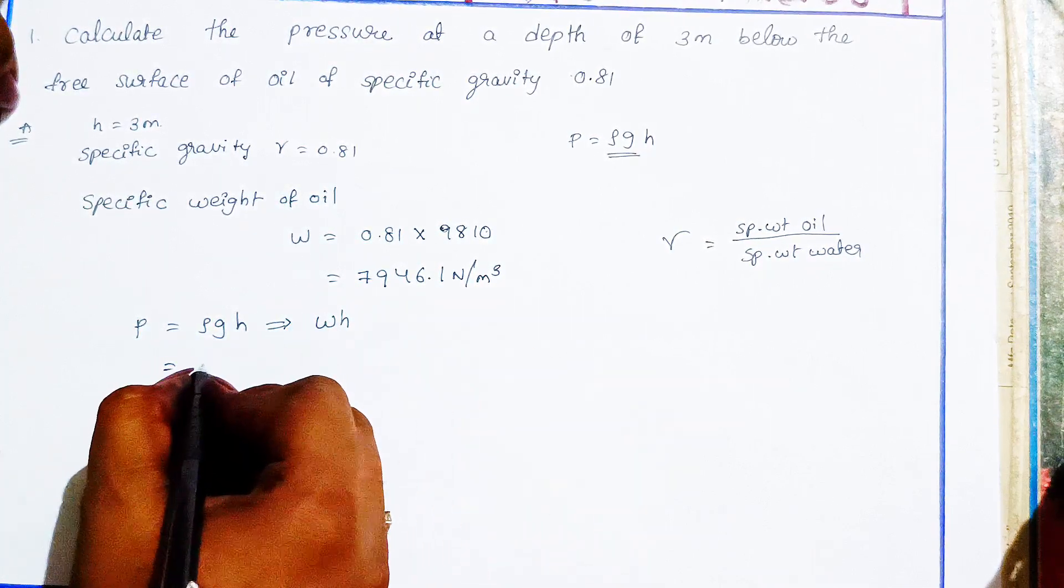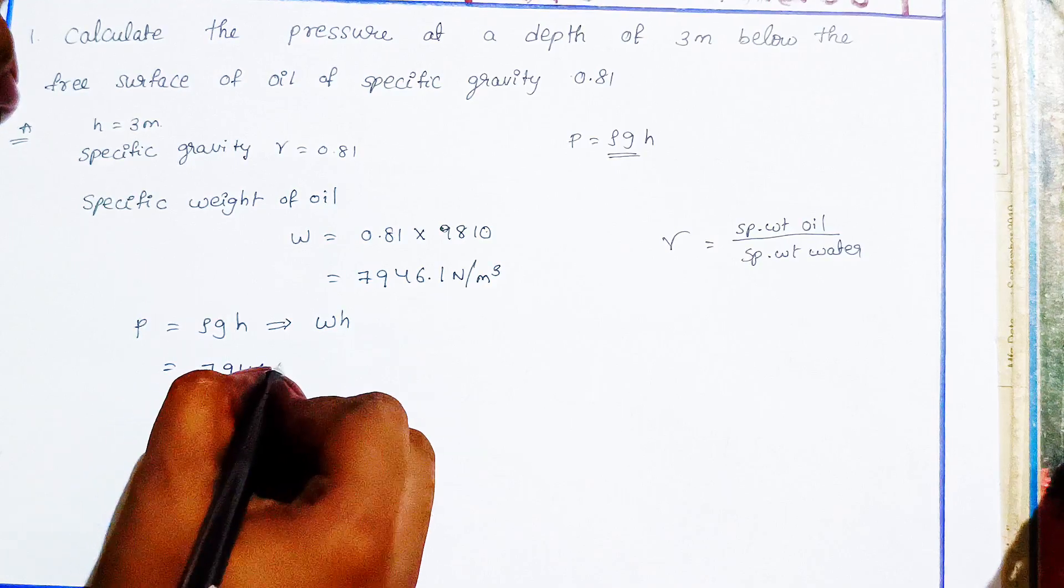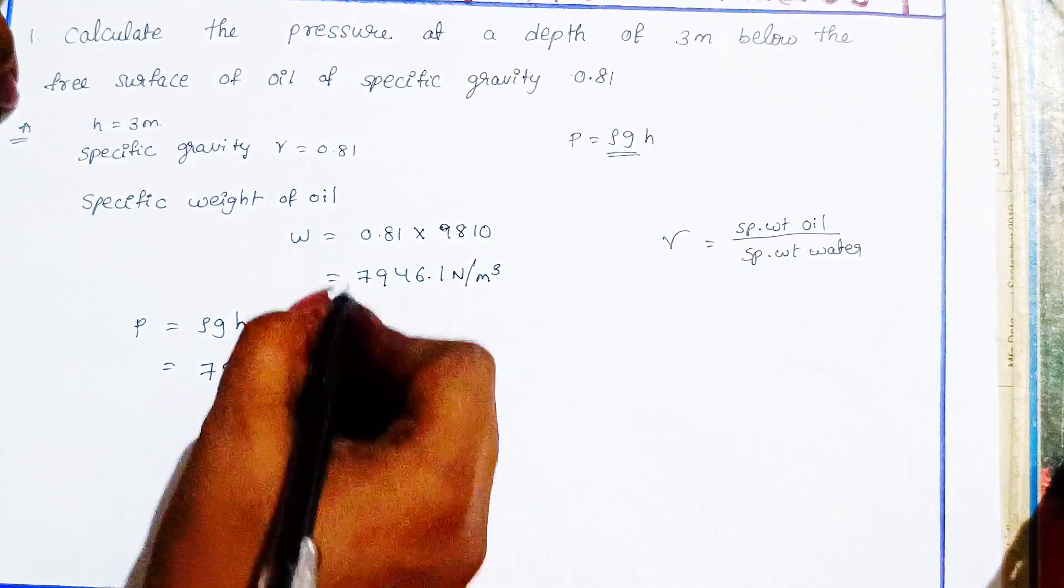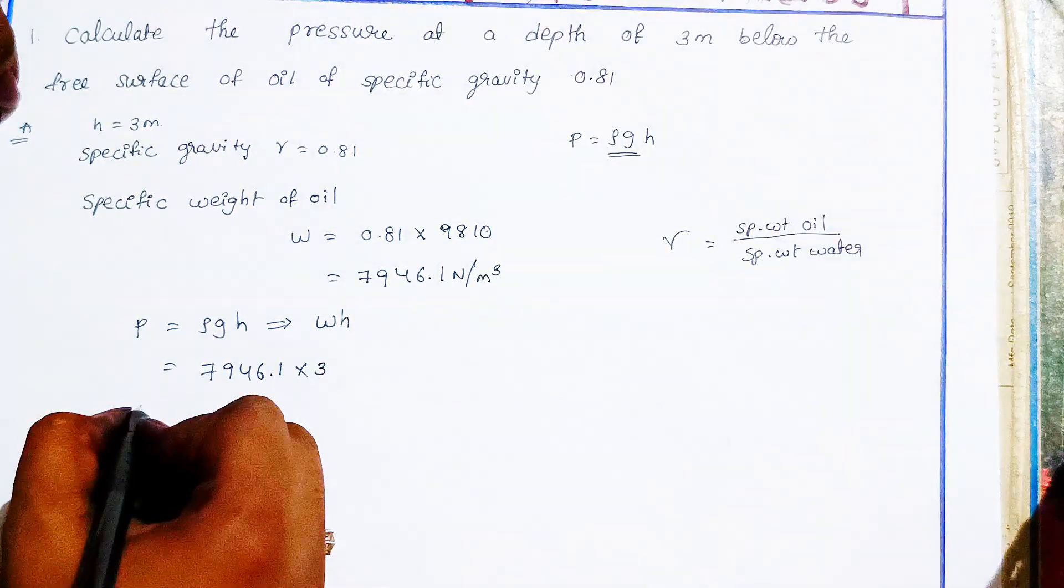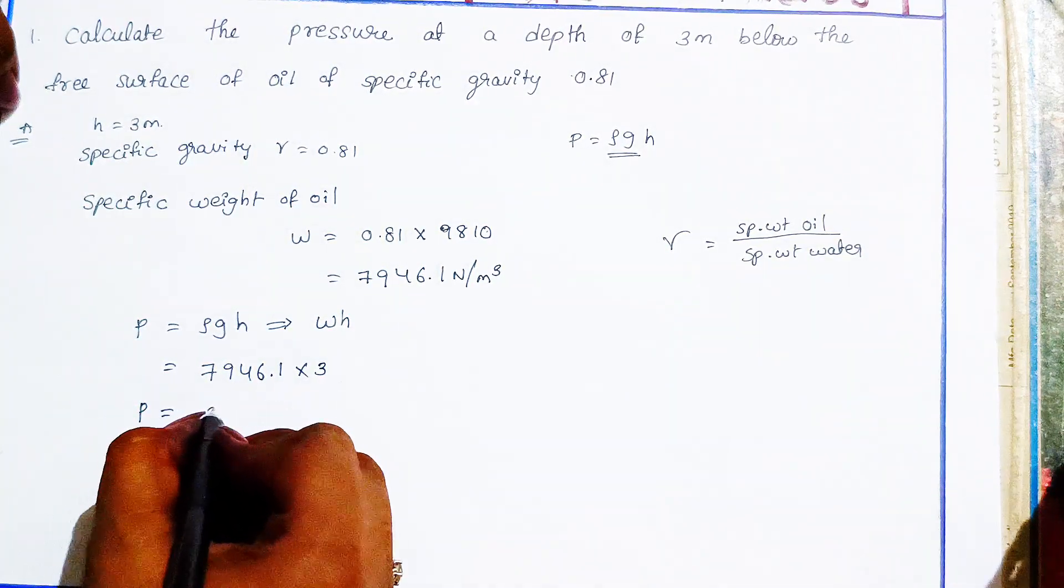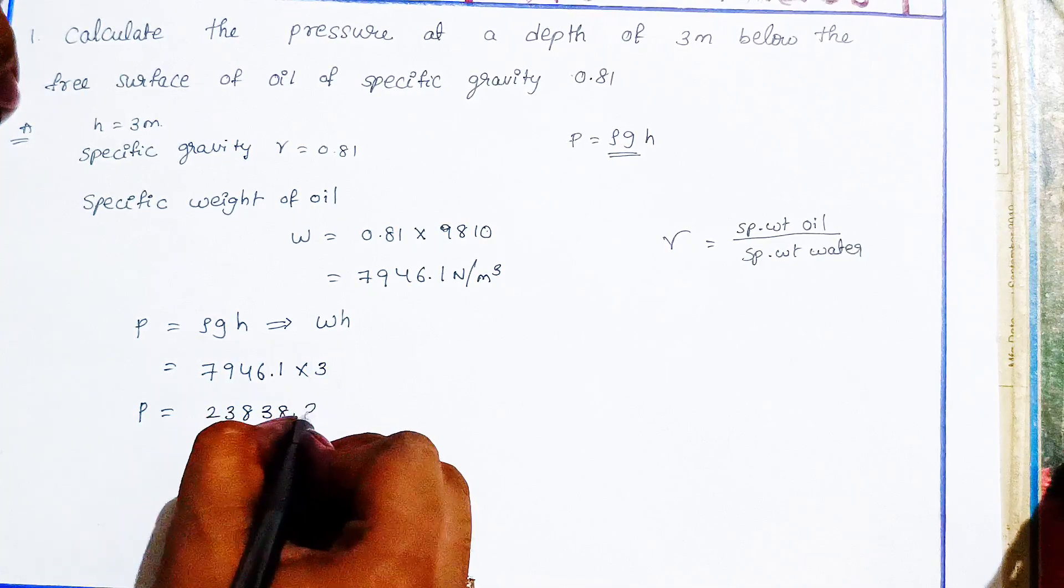The specific weight is 7946.1 and the height is 3 meters. Calculating these values, P equals 23838.3.